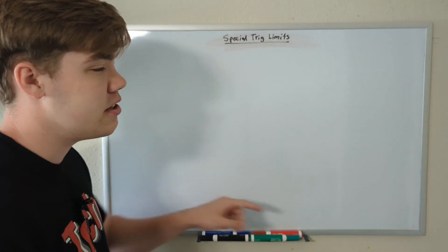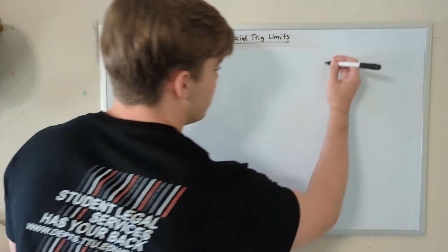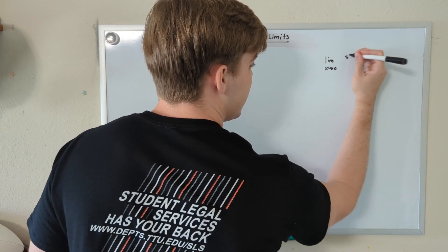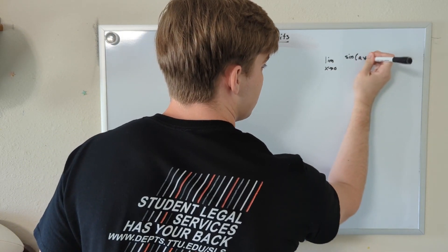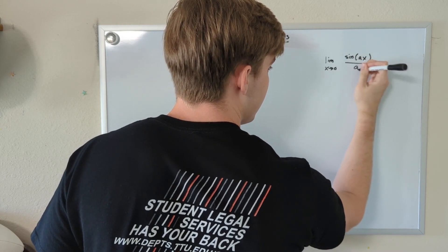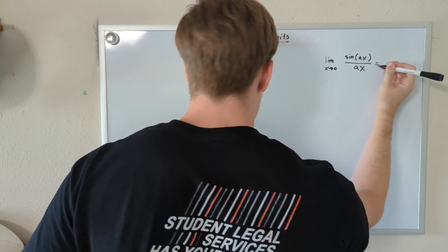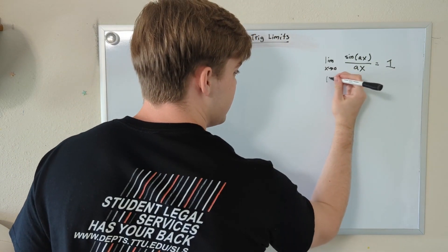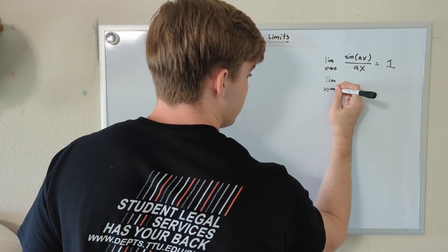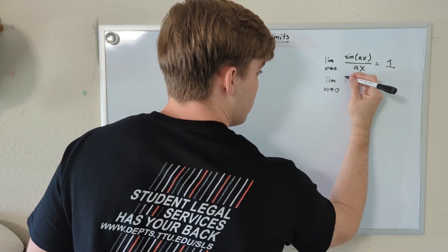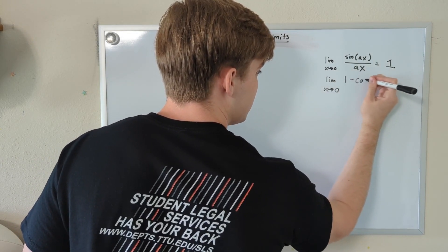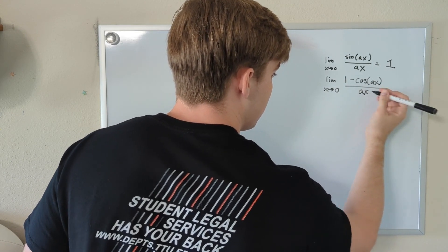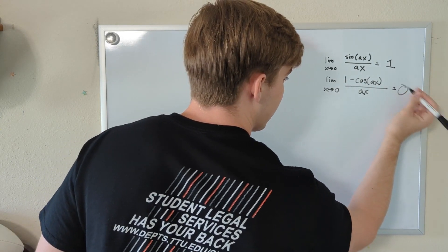There are exactly two special limits that we can use. Limit number one: the limit as x approaches zero of sine(ax) divided by ax is equal to one. The other special trig limit is the limit as x approaches zero of one minus cosine(ax) divided by ax, and this is always equal to zero.